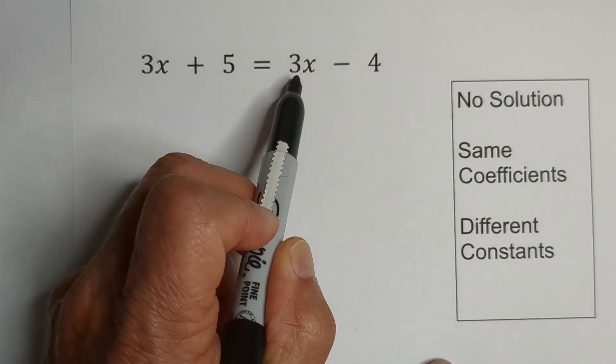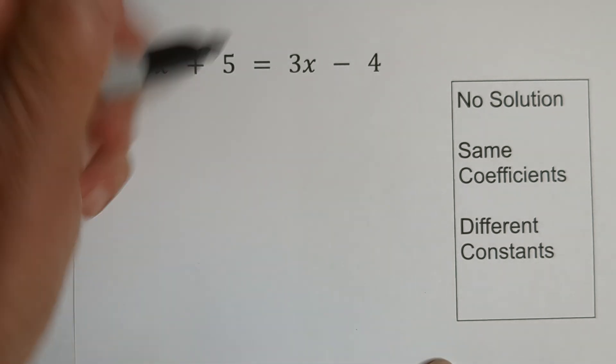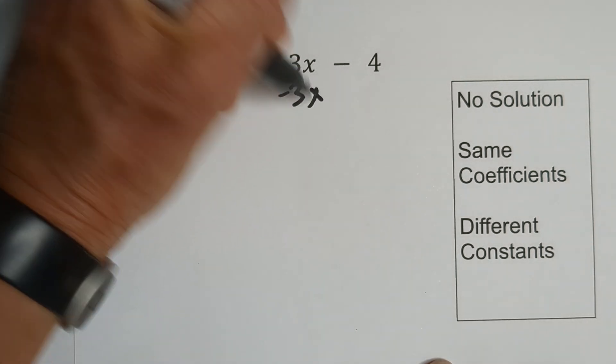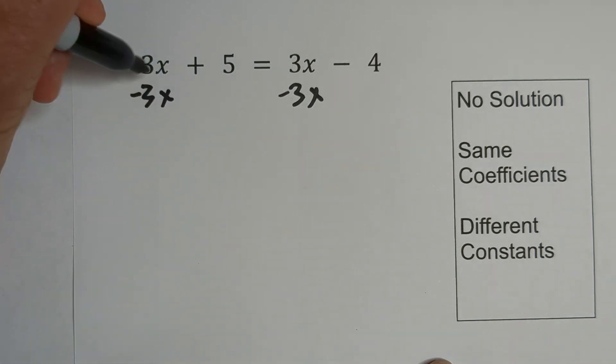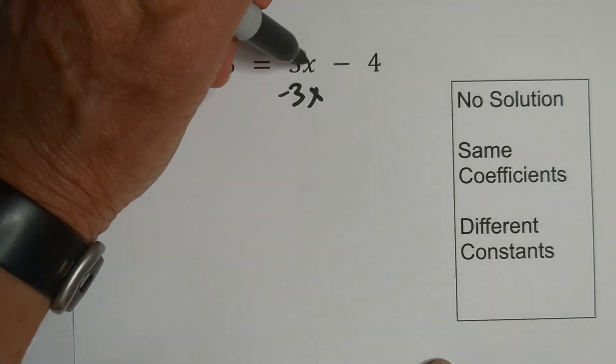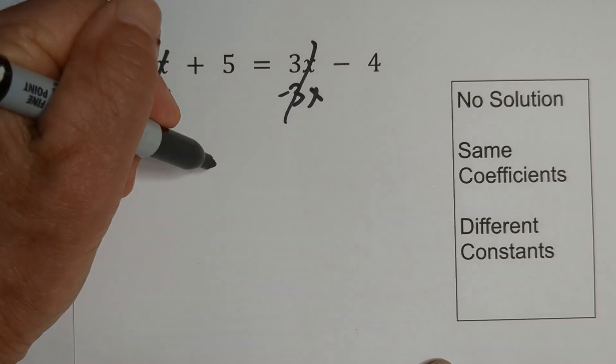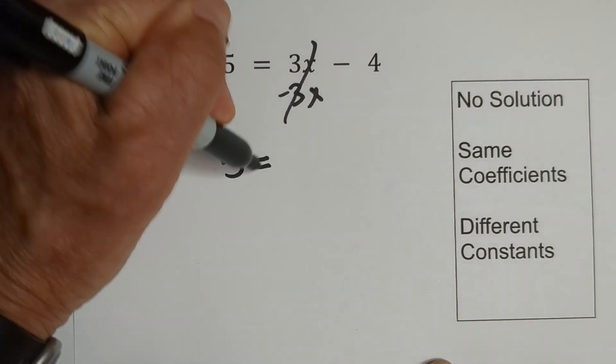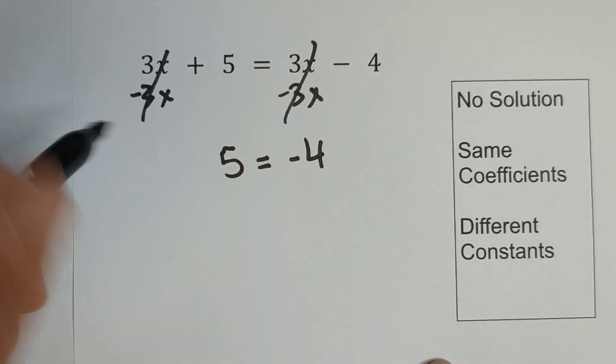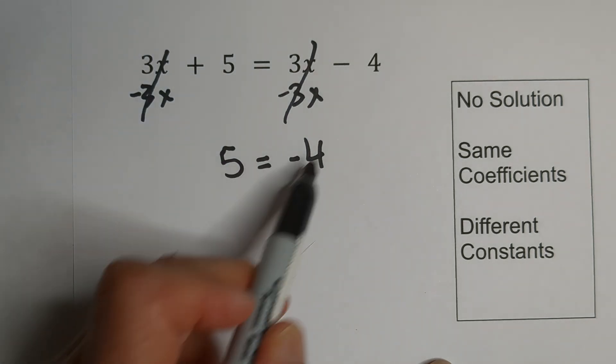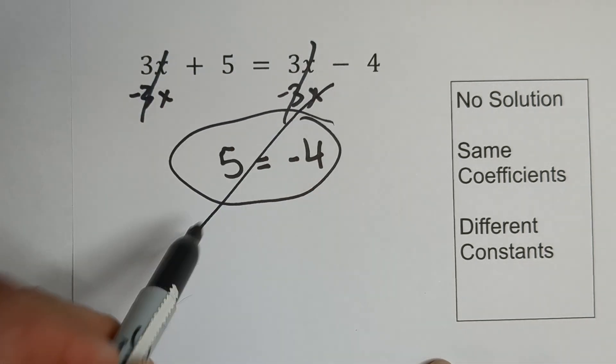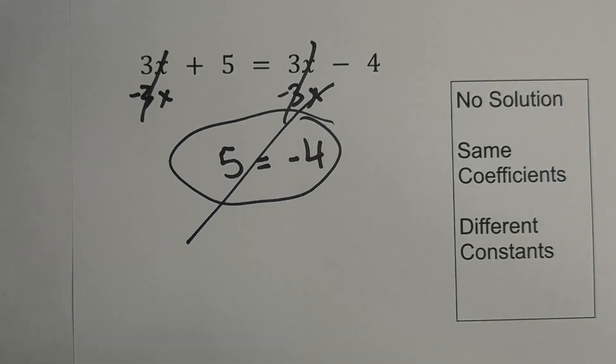First I'm going to move the variables to the left by an inverse operation. Notice that everything cancels out. Bring down the five and bring down the negative four. Five does not equal negative four, so there is no solution.